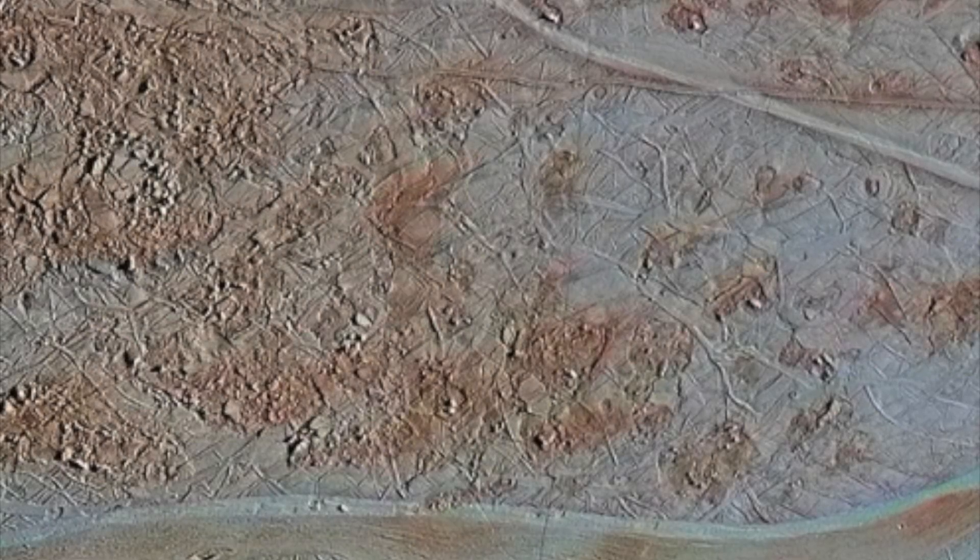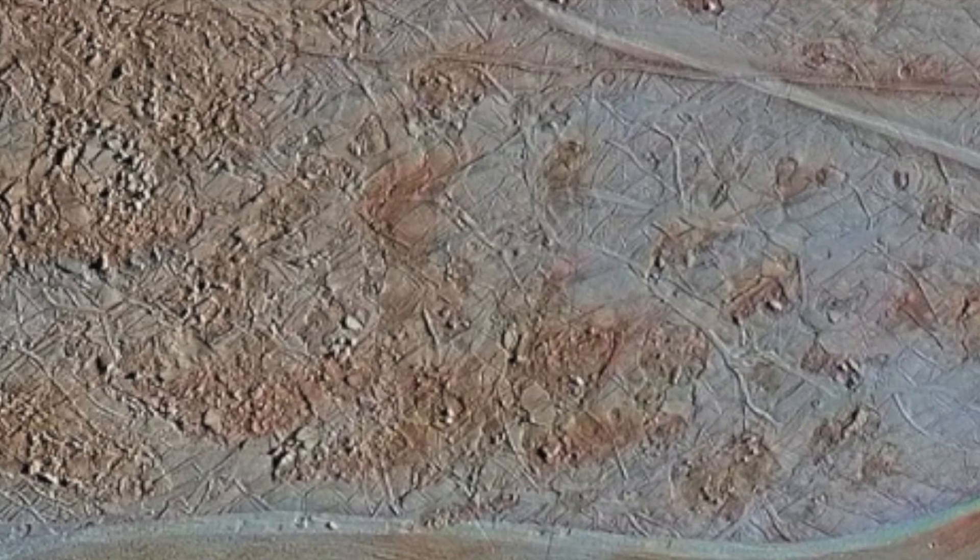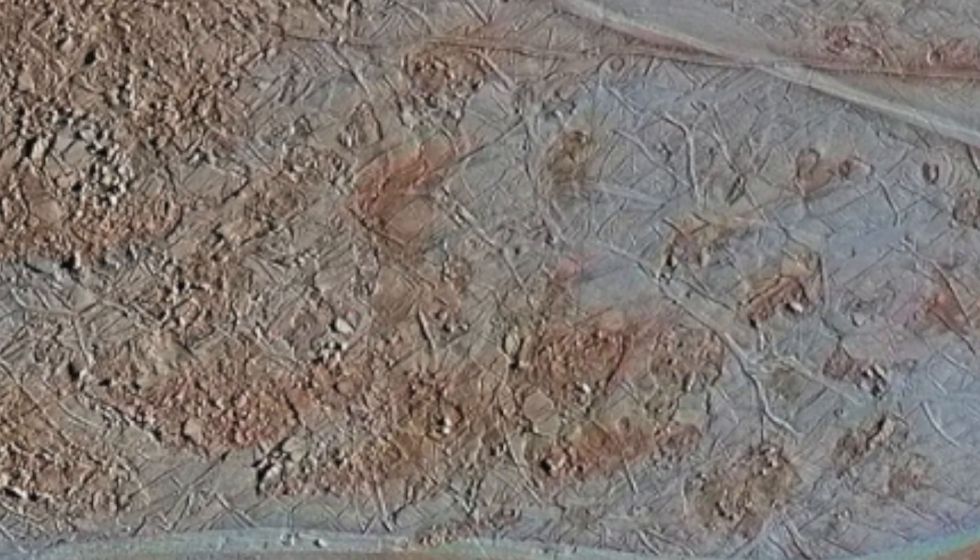Whereas other moons, such as Jupiter's neighbouring moon Io, are highly volcanic with obvious activity, Europa's volcanoes, if they exist at all, have been much harder to pin down until now.